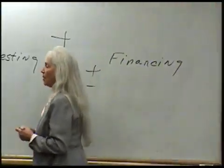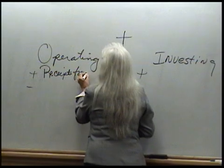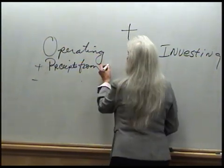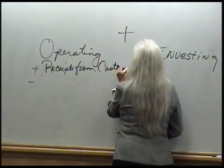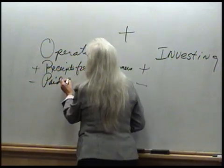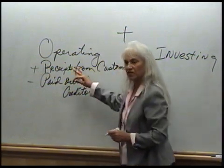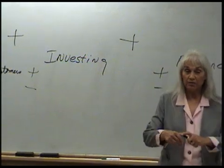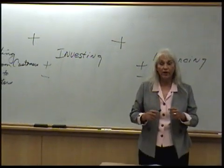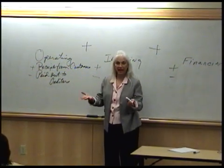Let's back up to the beginning. Operating — this is going to be receipts from customers. We're operating our business, so who's going to give us money? Customers. And who are we going to be paying? We pay out to creditors and all those people we owe. So this section is basically what you're getting from customers and what you're having to pay out to your creditors, vendors, suppliers, and employees. That's your operating section — what we get from customers minus what we have to pay out for our bills.